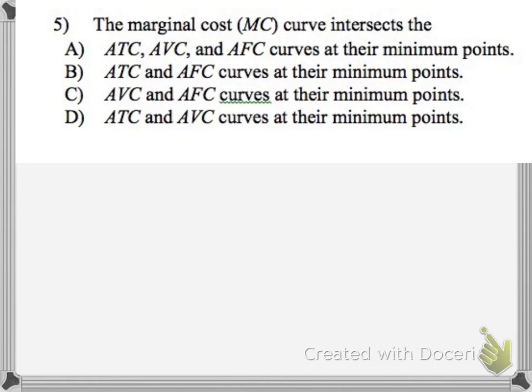So, the marginal cost curve intersects the what? Now, this one, I'm actually going to look at the answers. So, they're looking at average total cost, average variable cost, and average fixed cost seems to be the main curve. So, let's draw those out.